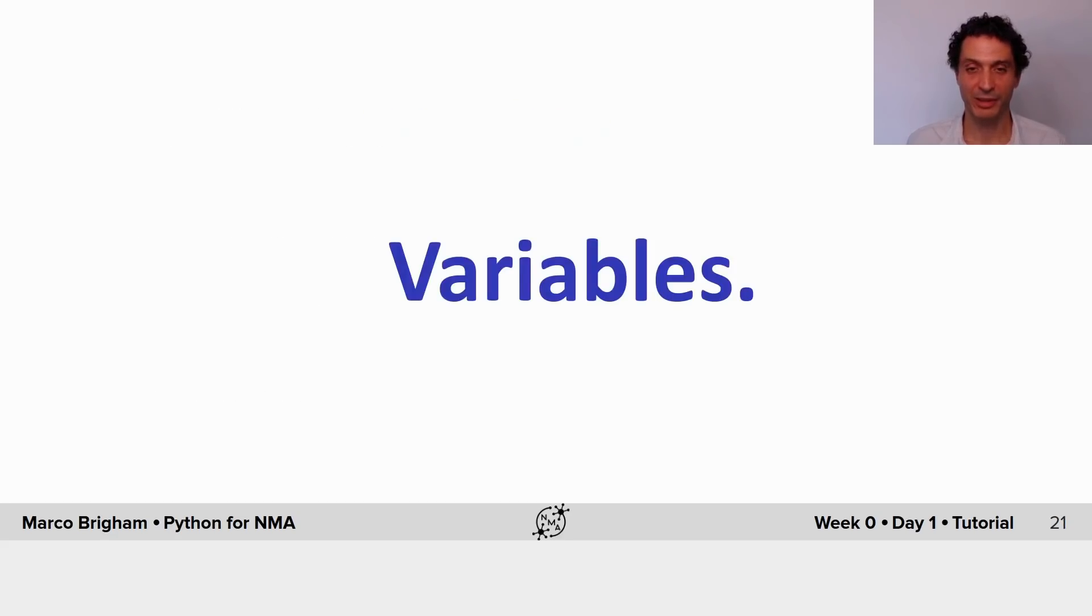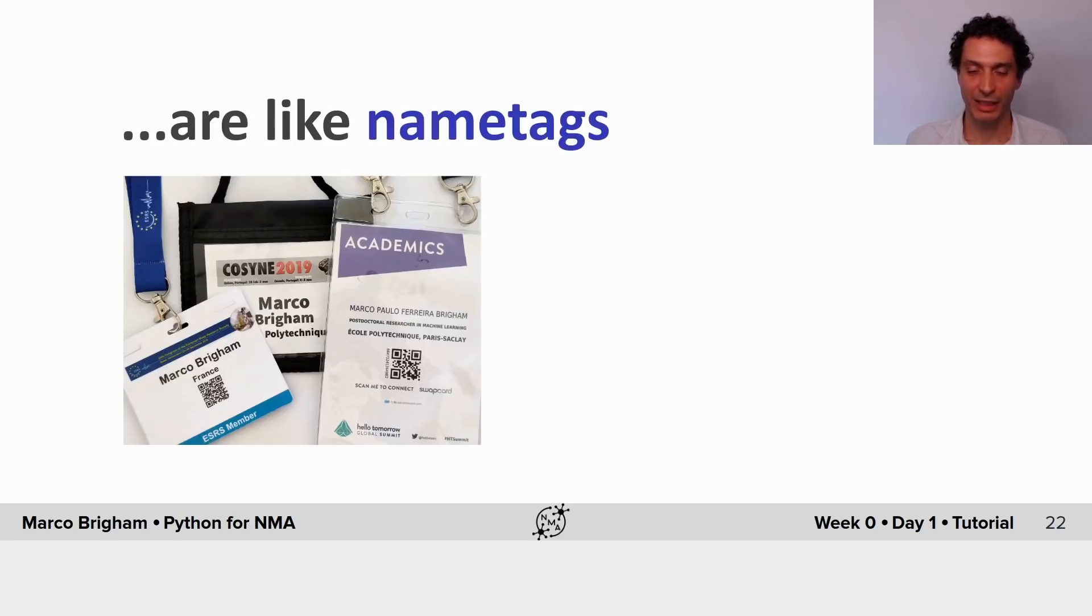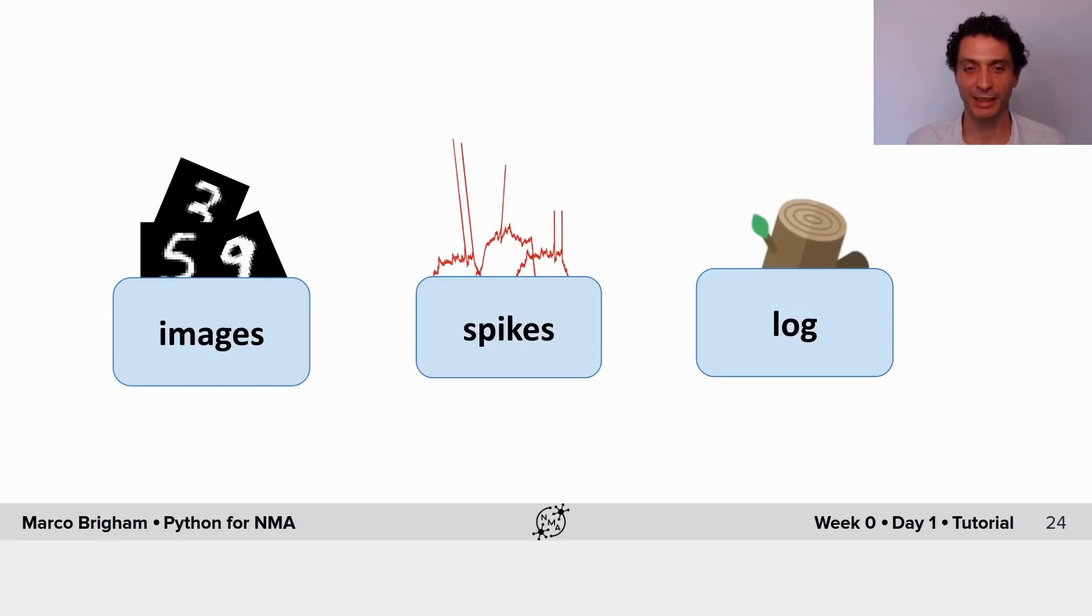Starting with variables, they are a bit like name tags that you can use to label your data. For example, let's say you had some images. You could call your variable images and store the images there. Or if you had some spiking data, some traces, you could store them on a variable called spikes. And if you had some logging data from some device, you could store it in a variable called log.